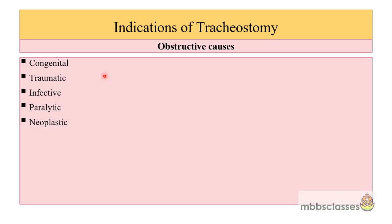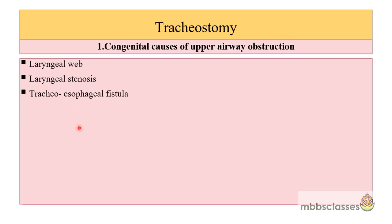Now let's see the indications of tracheostomy. The causes can be obstructive and non-obstructive. Among the obstructive, we subdivide into congenital, traumatic, infective, paralytic, and neoplastic. Under congenital causes, upper airway obstruction can be due to laryngeal web, laryngeal stenosis, or tracheoesophageal fistula. If a pediatric patient or infant presents with stridor, look for these possible causes — in these cases the infant might need tracheostomy or tracheotomy.